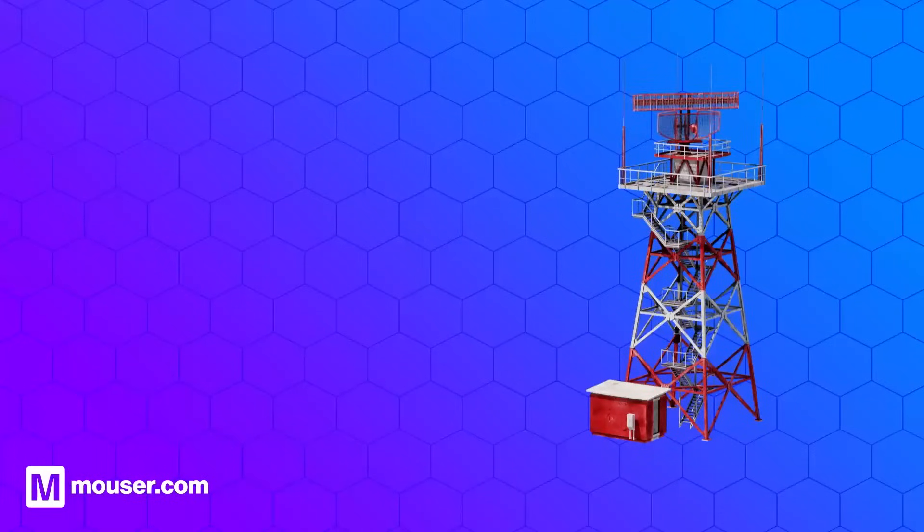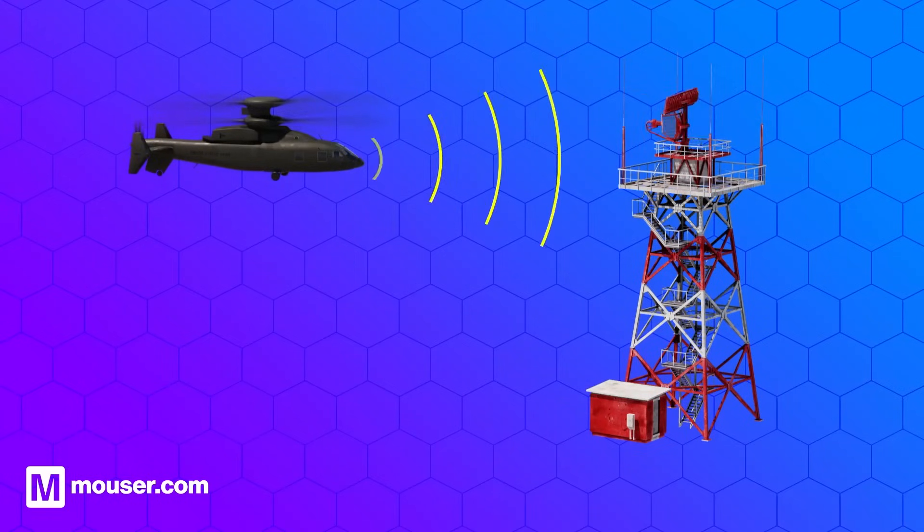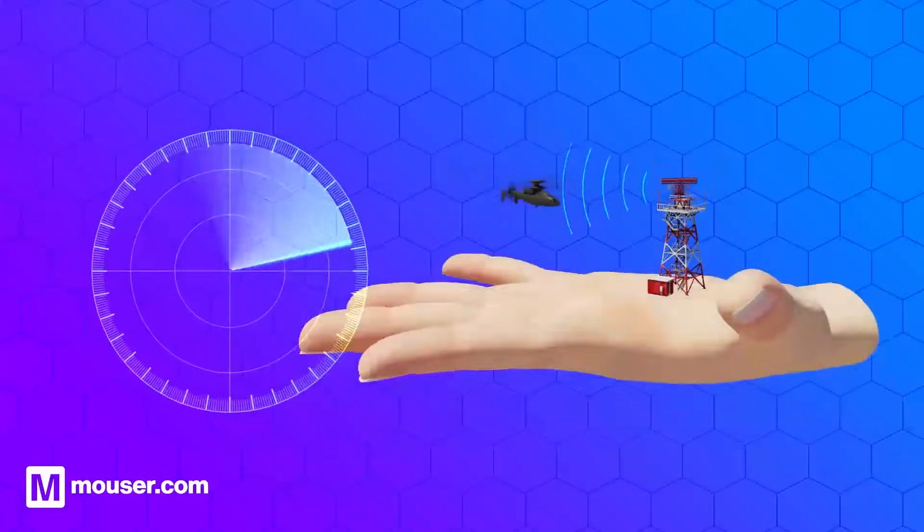Millimeter wave sensing is a miniaturized form of radio detection and ranging, or radar. It uses radio waves to detect object position and distance. In the same way the smartwatch is a computer on your wrist, millimeter wave sensing is a radar system in the palm of your hand.